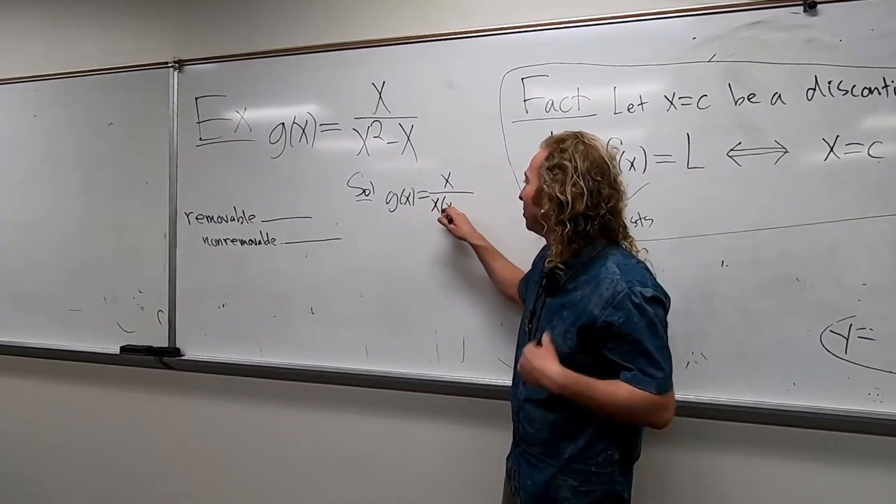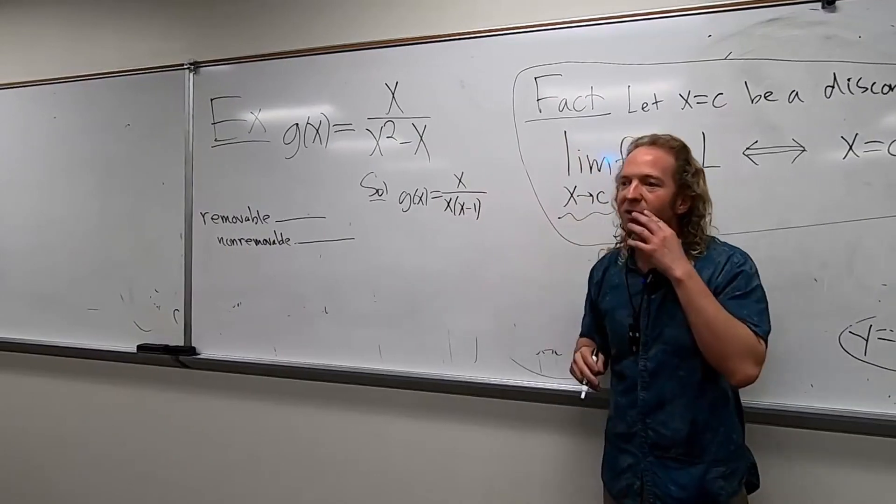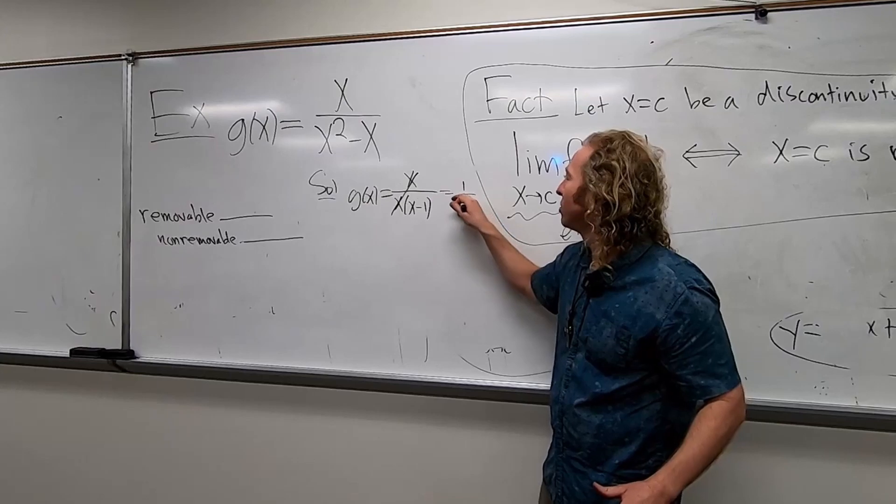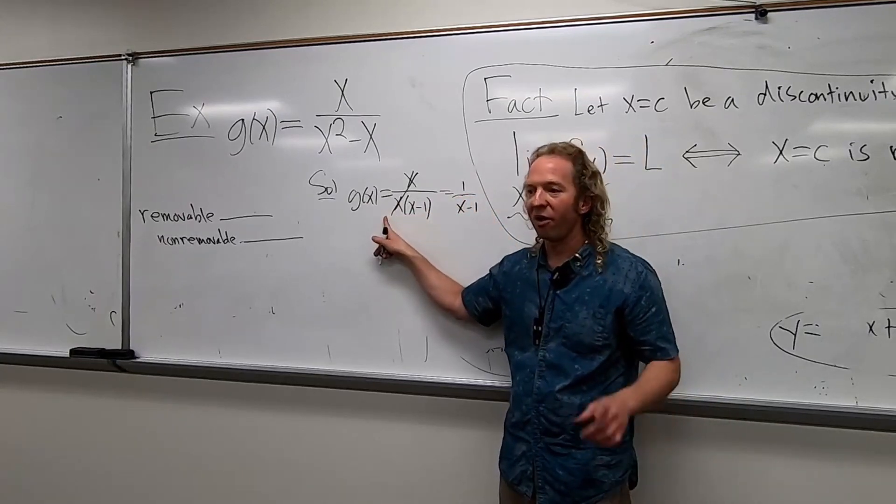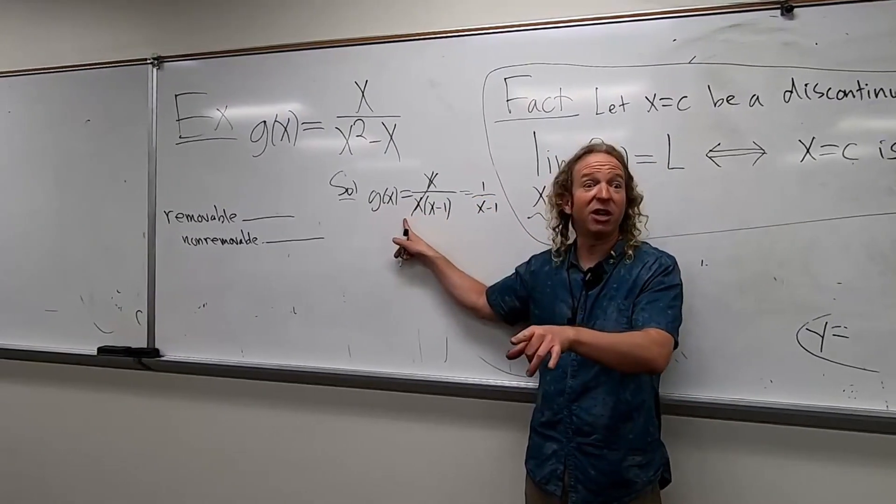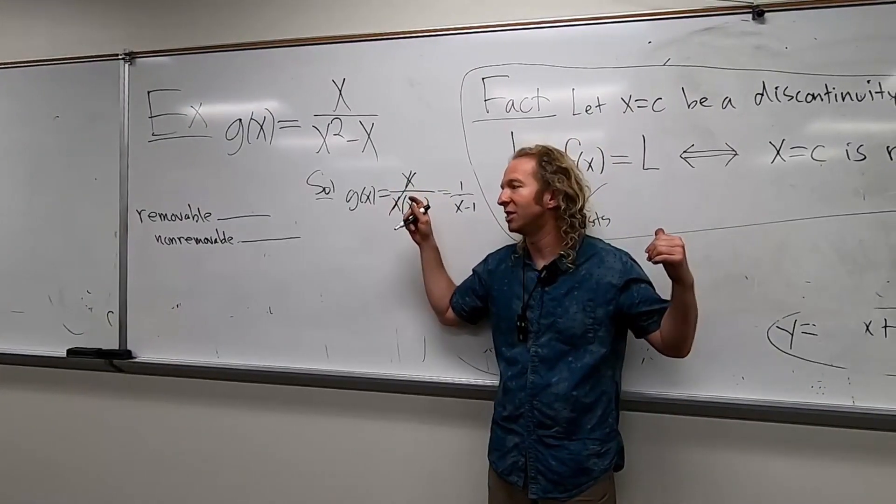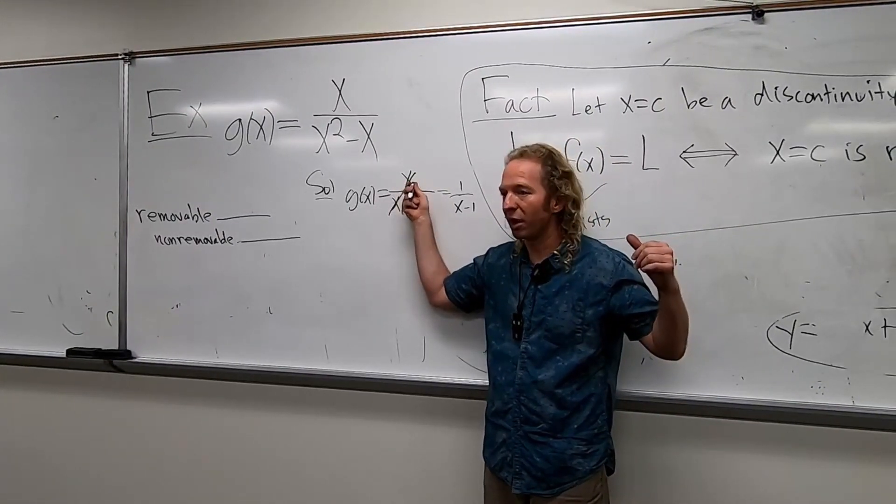This would have been a bad first example, at least in my opinion, because it's a little trickier to find the hole. This cancels. So where is the hole in this case? X equals zero, right? Because the question is, I probably should have said this, the hole happens at whatever makes this zero.